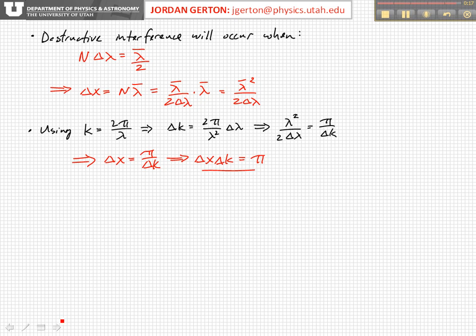And if we plug in for that k is equal to two pi over lambda, then delta k is equal to two pi over lambda squared delta lambda, we get this relationship, and eventually we can get that delta x delta k is equal to pi.